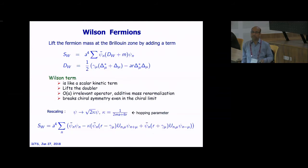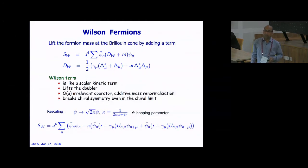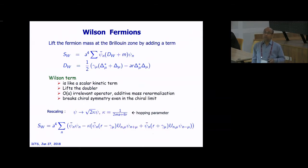If you rescale ψ a little bit, you get the Wilson action. In the early stages of lattice gauge theory, many people used to do calculations through this action without worrying about the chiral symmetry breaking. This is the Wilson fermion action on the lattice.